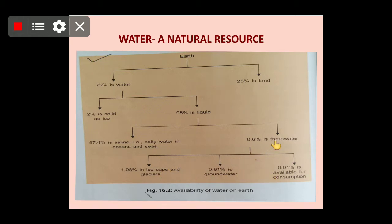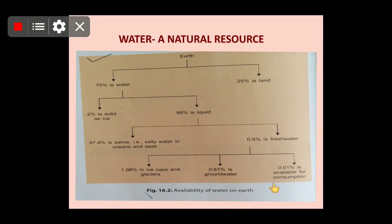Only 0.6% is the remaining water among the whole percentage which we can use. Among this 0.6% of fresh water, 1.98% is in the form of icecaps and glaciers — it is frozen and we cannot use it. Only 0.61% is as groundwater and 0.01% is actually available for consumption.